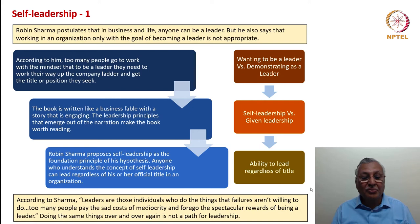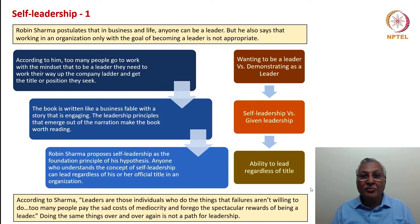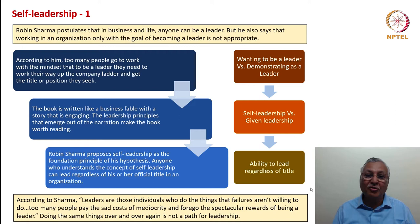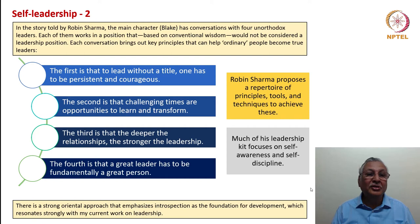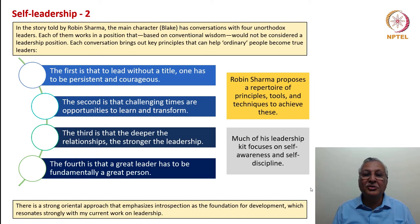According to Sharma, leaders are those individuals who do the things that failures — that is, failed leaders — are not willing to do. Too many people pay the sad costs of mediocrity and forego the spectacular rewards of being a genuine leader. Doing the same thing over and over again only inbreeds mediocrity; out-of-the-box thinking and performance are essential for demonstrating leadership. In this book, there is a story told through the main character Blake, who has conversations with four unorthodox leaders — each of them works in a position that conventional wisdom would not consider a leadership position, yet each conversation brings out key principles that can help ordinary people become true leaders.